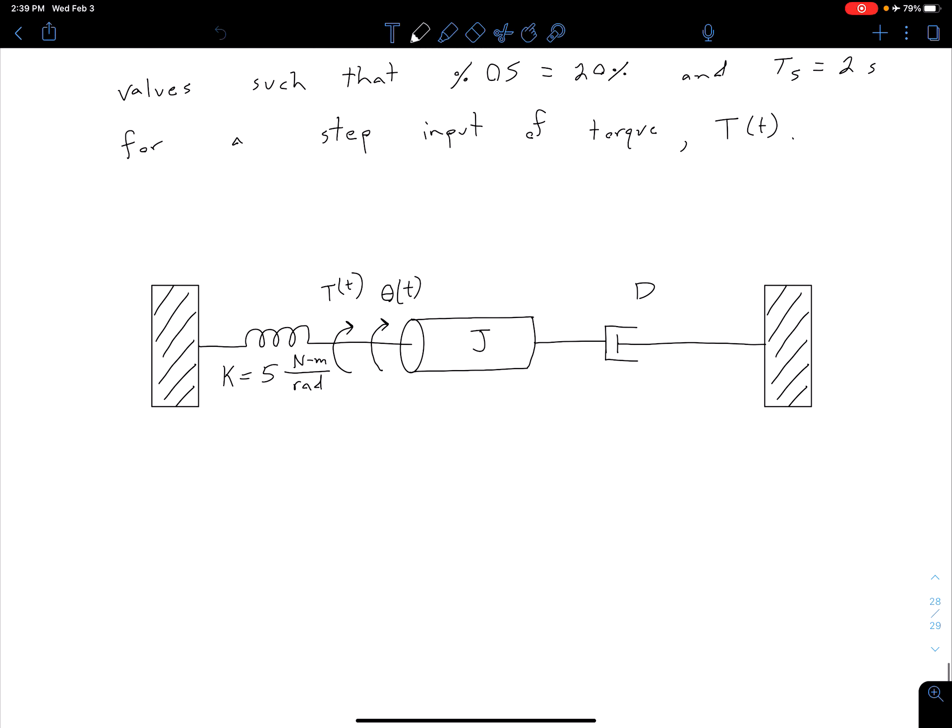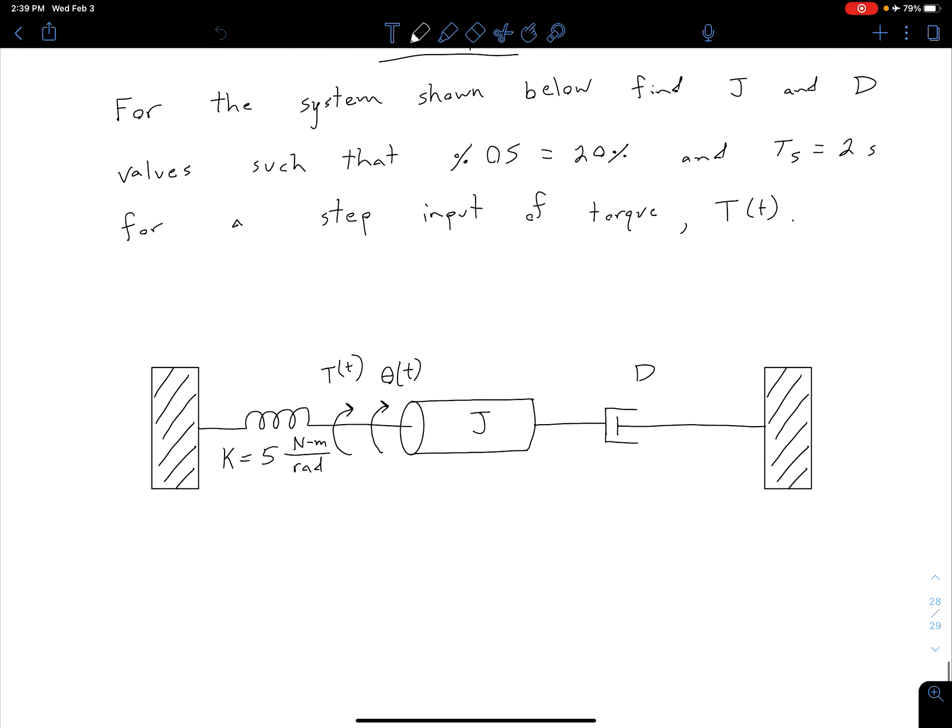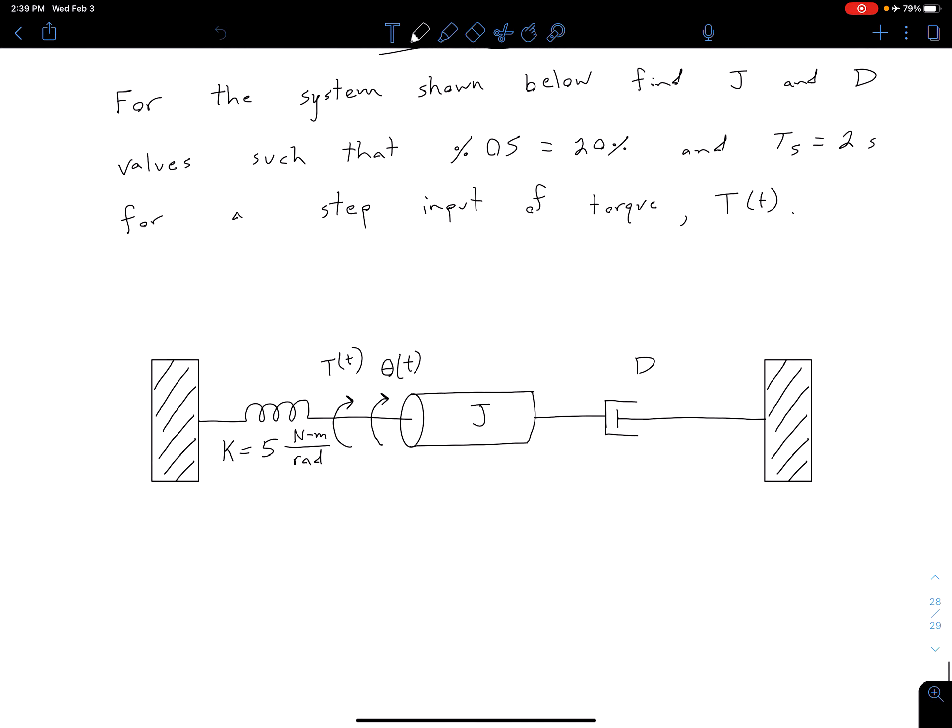We see we have a rotational mechanical system, we have a torque which is spinning in one direction, and then we have our angular position theta which we're keeping track of. We are given information for our spring, K equals 5, but we don't have any information for our inertia or for our viscous damper. So that's what we're trying to figure out. What J and D values do we need to get our desired percent overshoot and our desired settling time.